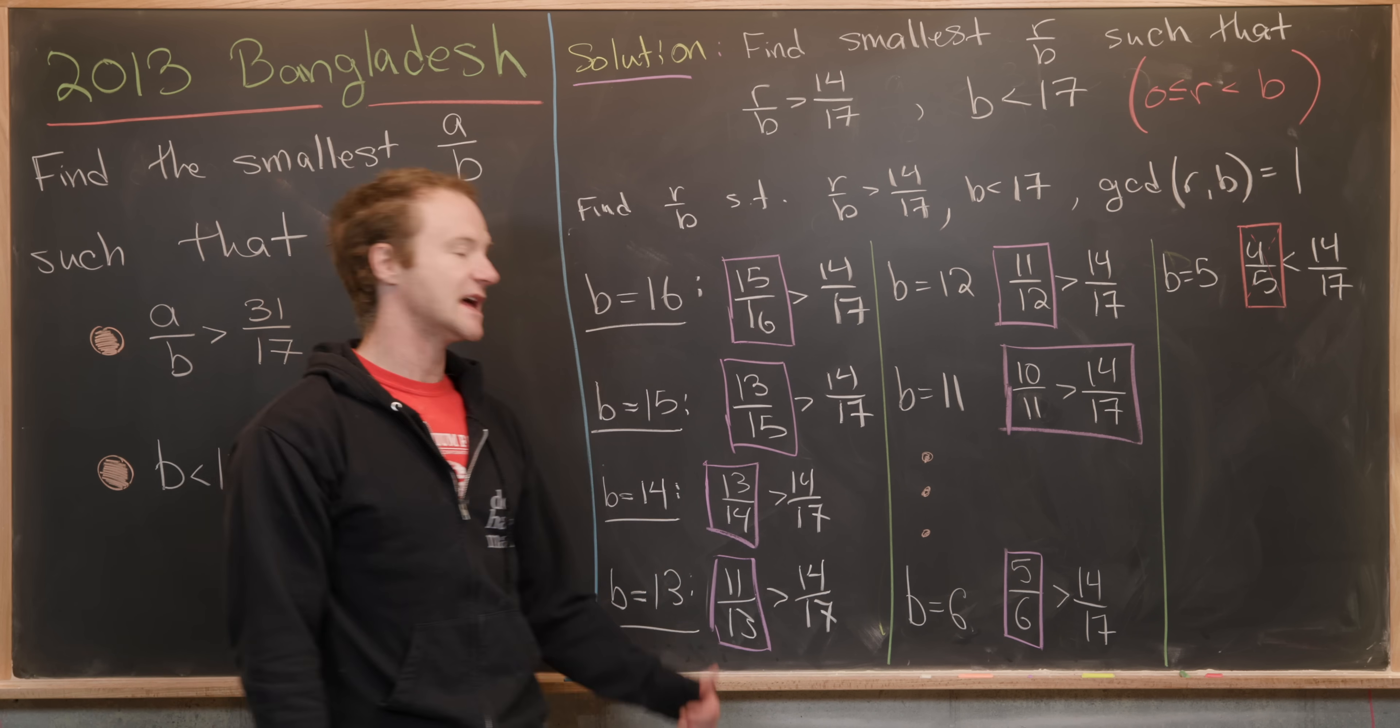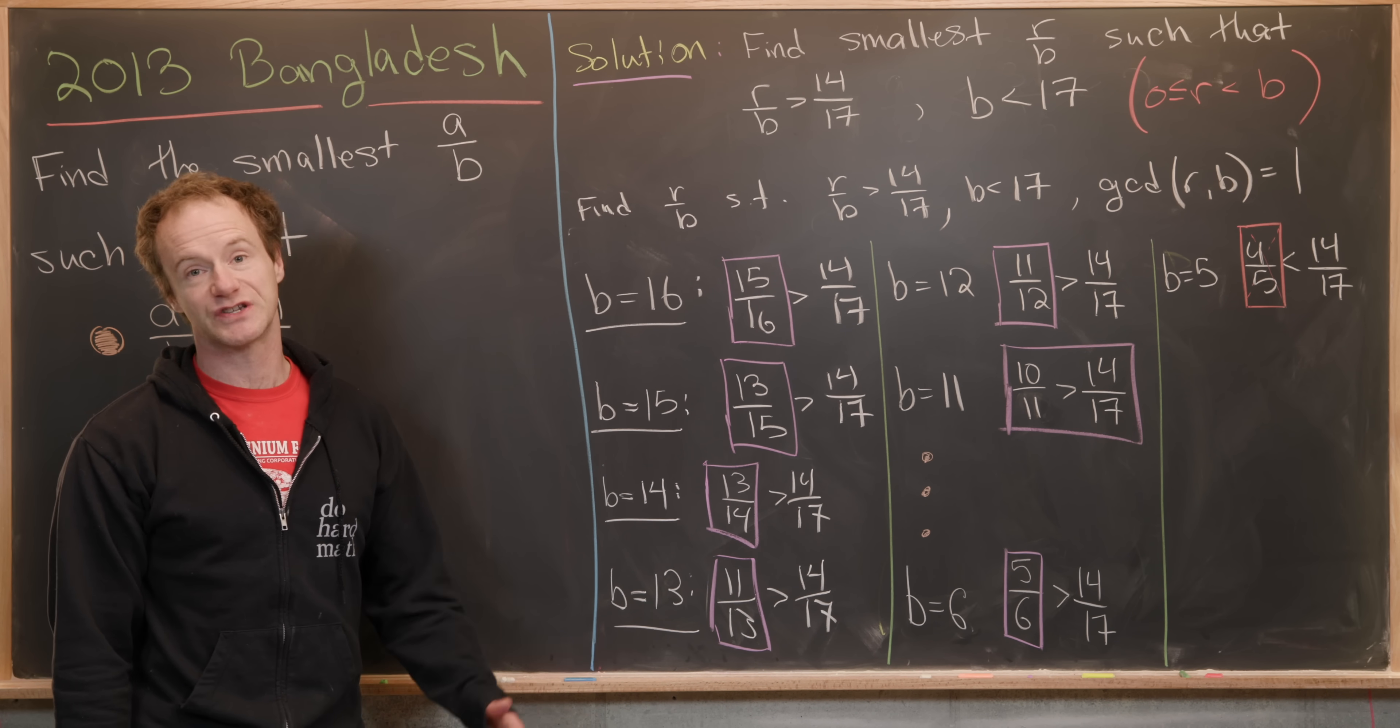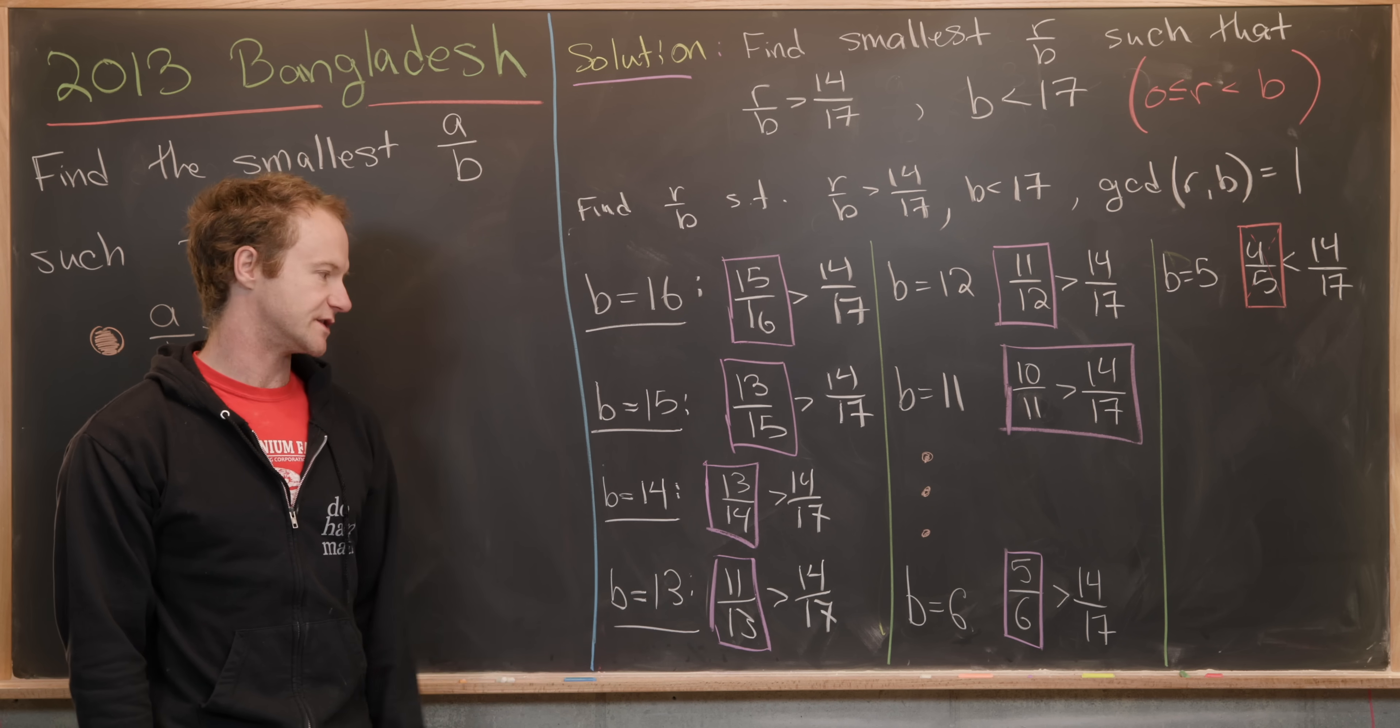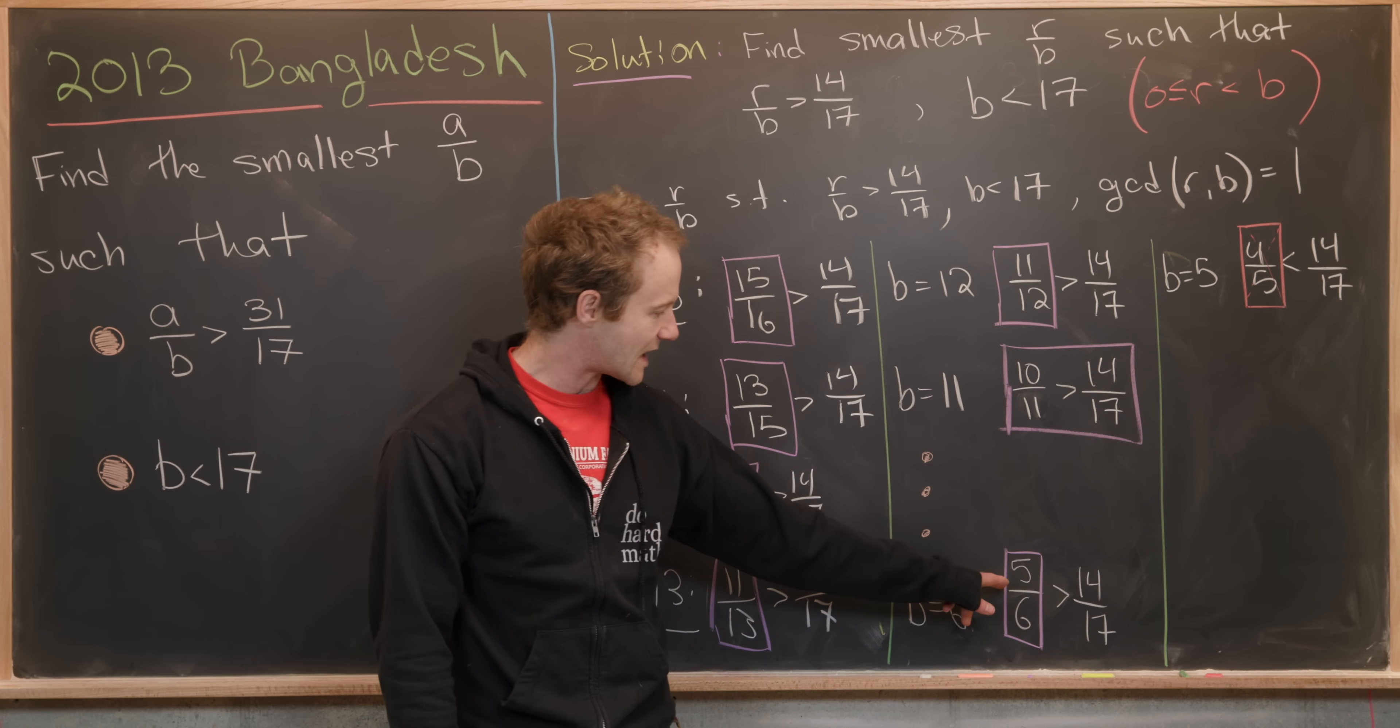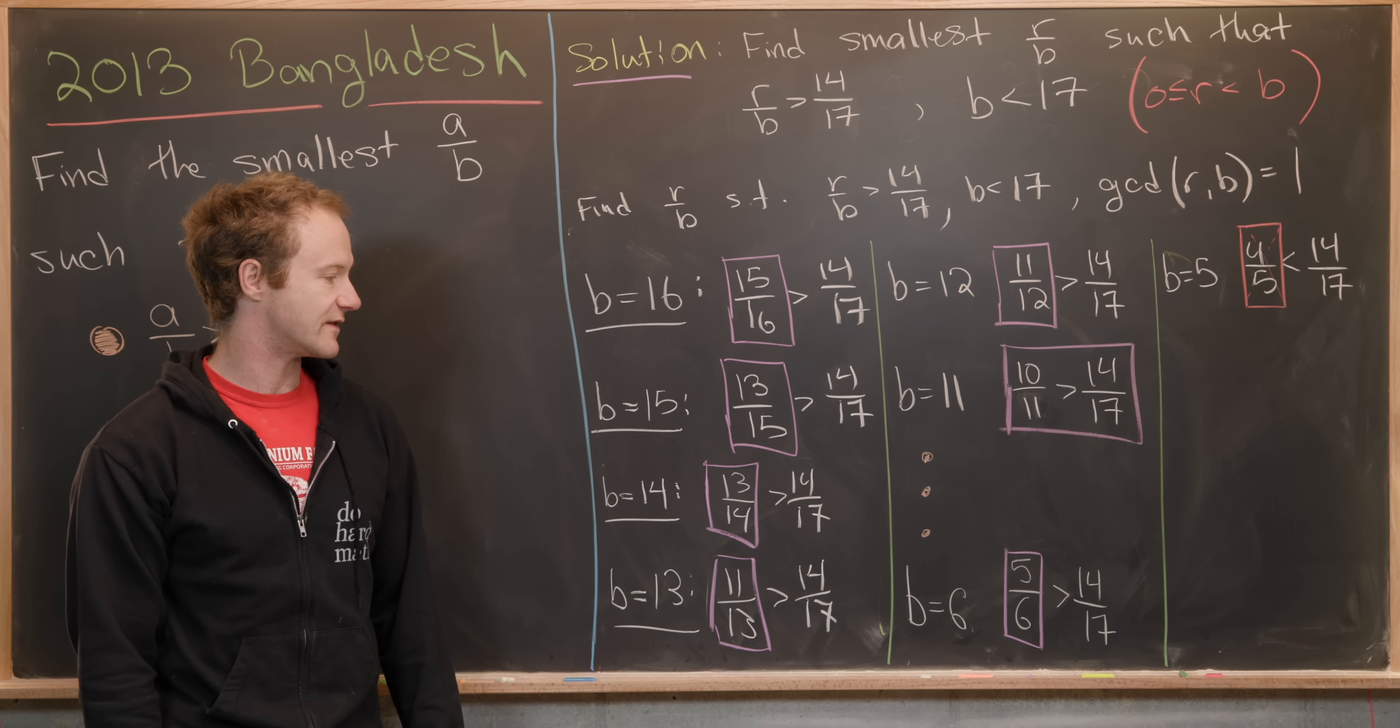For B equals 10, we just have to check nine over 10. For B equals nine, we just need to check eight over nine, and so on and so forth, all the way down until we get to five over six, which is bigger than 14 over 17.